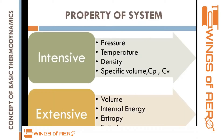Now we will look at the properties of a system, which are classified into two forms: intensive and extensive. These properties are distinguished by whether they are dependent on or independent of mass. Intensive properties are independent of mass. Examples include pressure, temperature, density, specific volume, specific heat at constant pressure (CP), and specific heat at constant volume (CV).